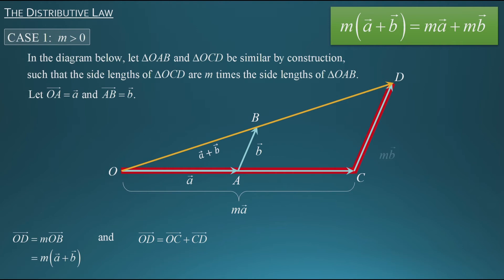Similarly, we can express vector CD as m times vector B. Vector B and vector CD are in the same direction — they're parallel — based on the fact that we have similar triangles with all equal angles. And since the side lengths of triangle OAB multiplied by m give the side lengths of triangle OCD, vector CD can be expressed as m times vector B. So looking at the bottom of the screen, vector OC plus vector CD can be rewritten as m times vector A plus m times vector B.